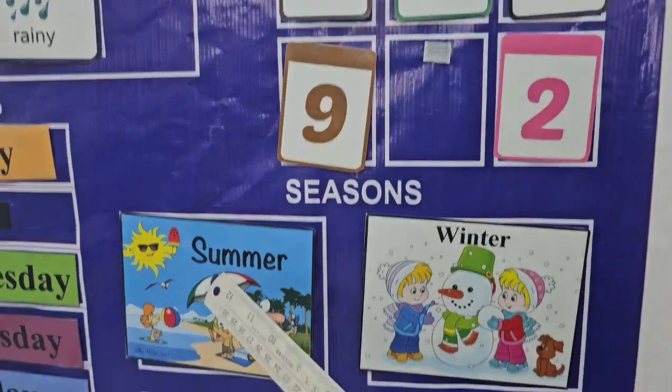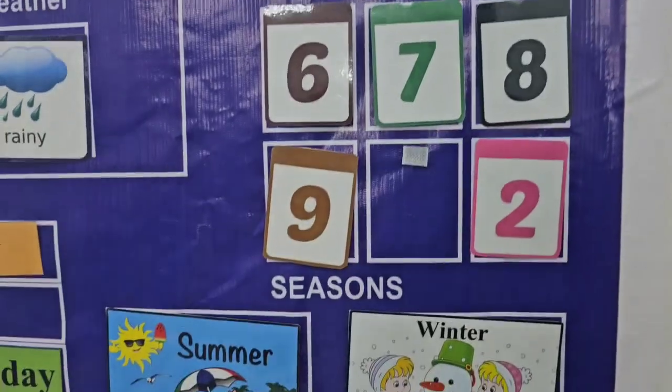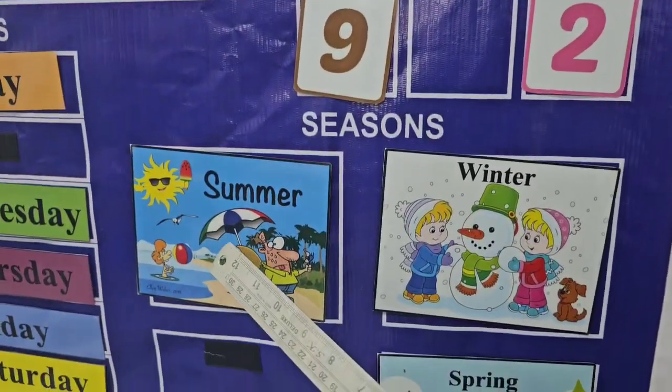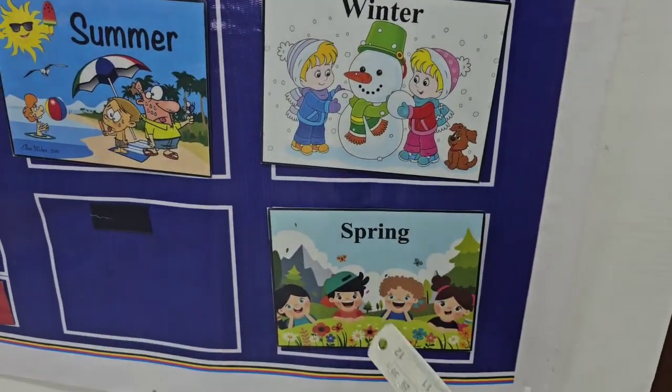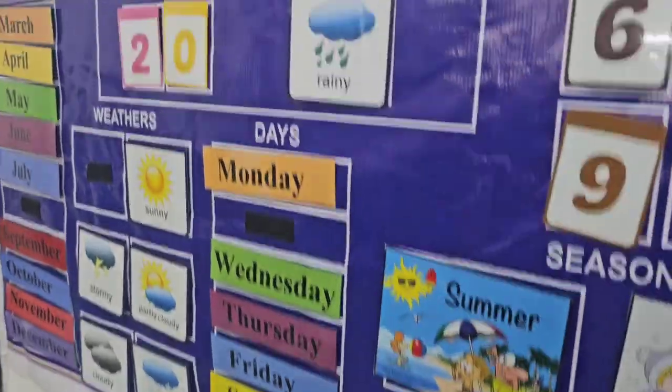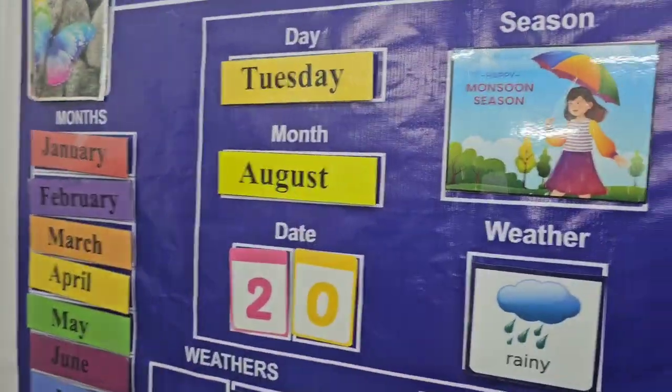This chart represents different seasons: summer season, winter season, spring season. Now we will set our calendar.